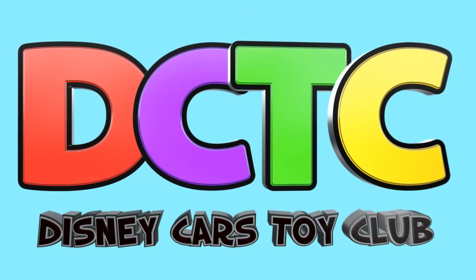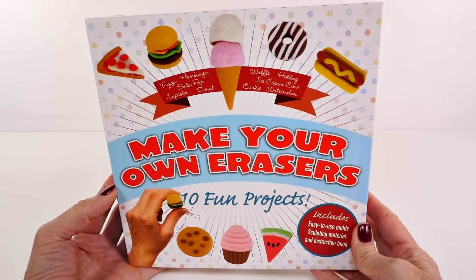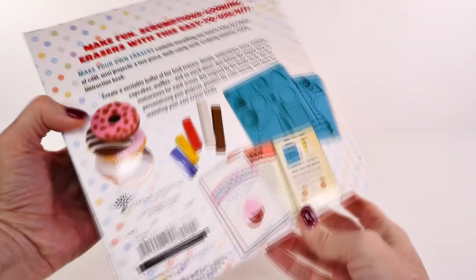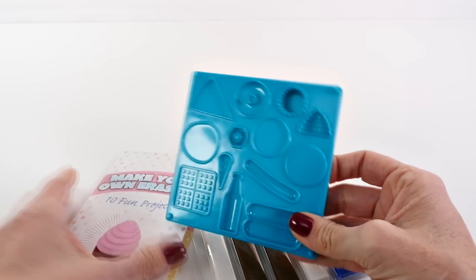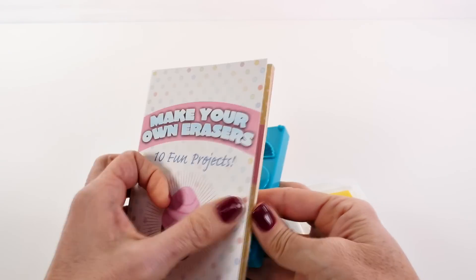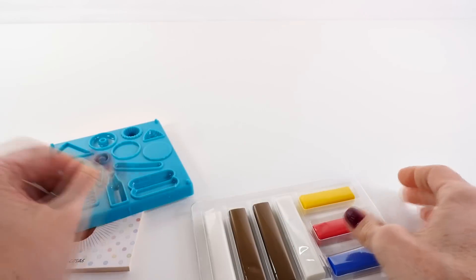Hey guys, welcome back! On today's episode we are going to be using this kit to make some teeny tiny erasers. These are the supplies that we'll need: the instruction booklet, the molds, and the sculpting clay.